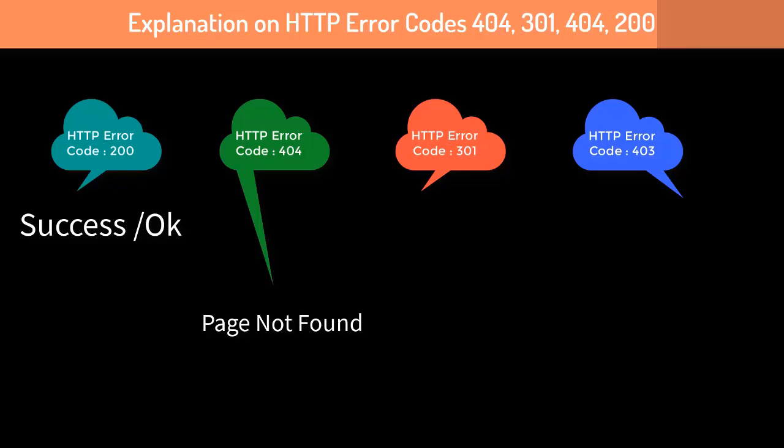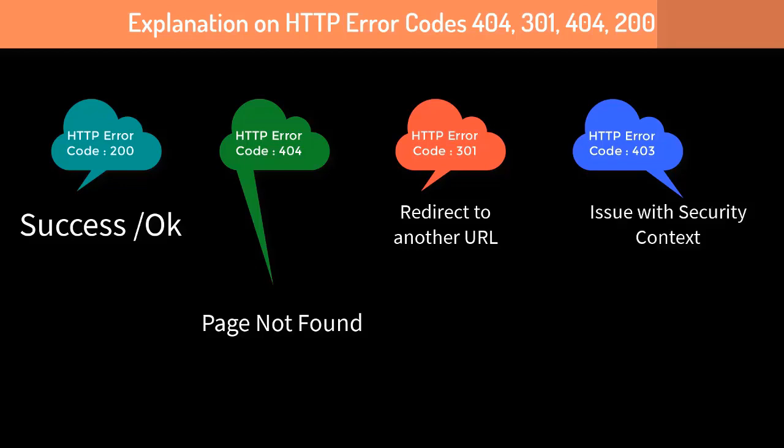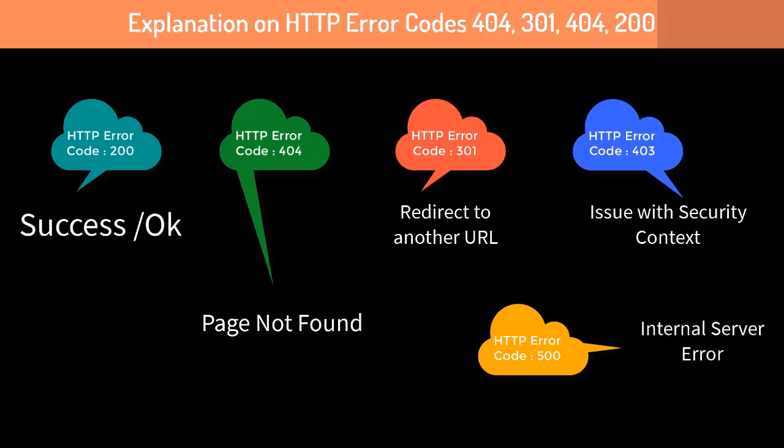The 301 code is a redirect code — the server tells the client that the requested resource is not at this URL but at a different URL, so it provides the redirect URL back to the client, who then makes a call to that different URL. The 403 code is related to security context — it is encountered when there is a permission-related issue or access problem.